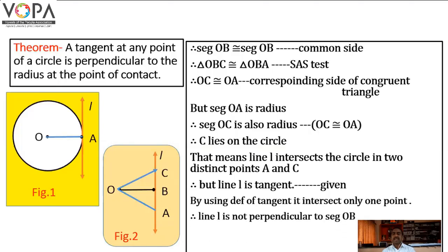Therefore, line L is not perpendicular to segment OB — a contradiction. Hence, line L is perpendicular to segment OA. Hence it is proved: a tangent at any point of a circle is perpendicular to the radius at the point of contact. Siddha Zhale.